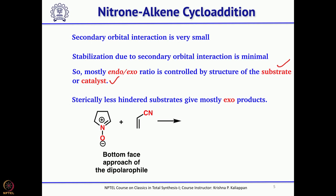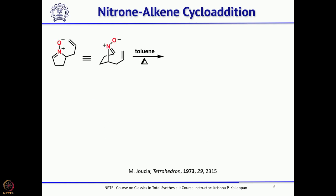The formation of exo or endo is mainly controlled by your substrate or catalyst. Mostly it gives the exo product. If you take a cyclic nitrone and treat with a dipolarophile like acrylonitrile, you get the exo product as the major product — this is a bottom-face approach of the dipolarophile. There are also several intramolecular 1,3-dipolar cycloadditions between a nitrone and alkene bond present in the same substrate. For example, you can see this molecule: the O-minus will attack here and the double bond will attack, and the positive charge on nitrogen will be neutralized to give a tricyclic ring.